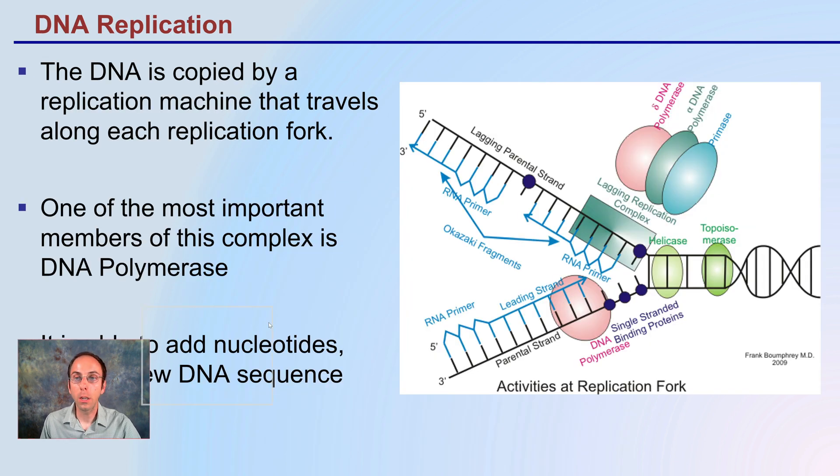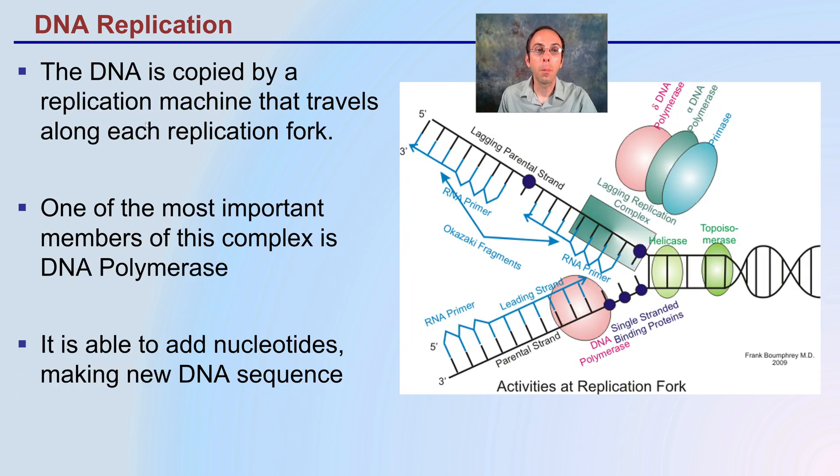This replication process involves DNA being copied by a replication machine that travels along the replication fork, where helicase is initially unwinding the DNA. One of the most important members of this complex is that polymerase because that is the one responsible for adding the nucleotides. It's able to add those nucleotides creating and making that new DNA sequence and we see that here with them binding together.